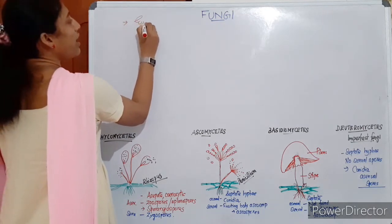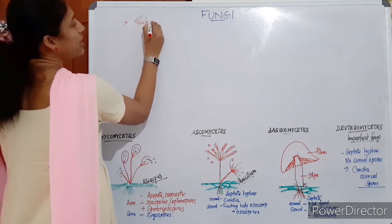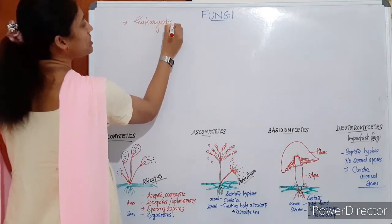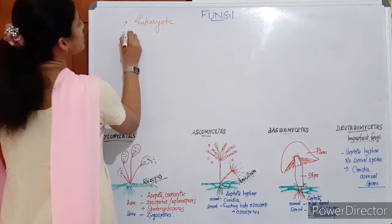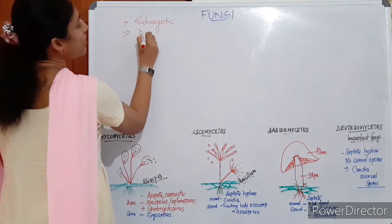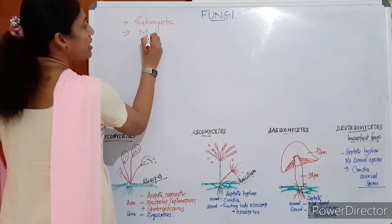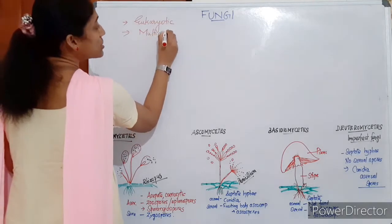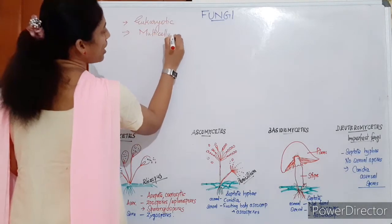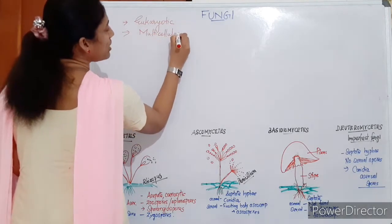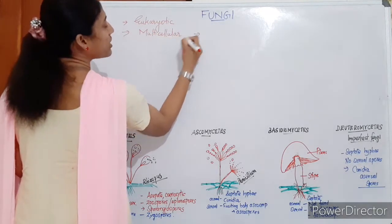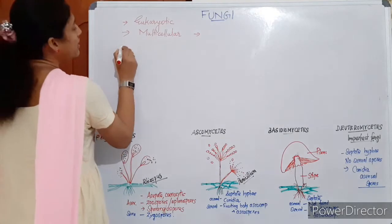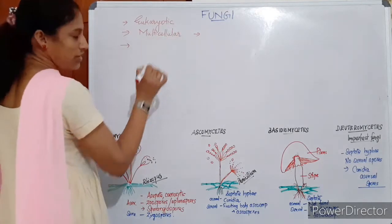Fungi are eukaryotic members, and they are multicellular. But some members are unicellular — like yeast, which is an exception.